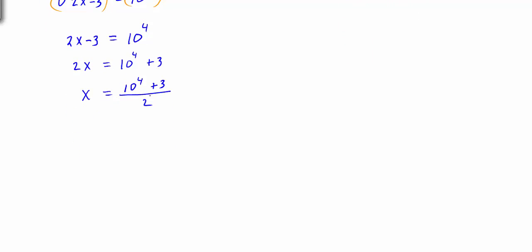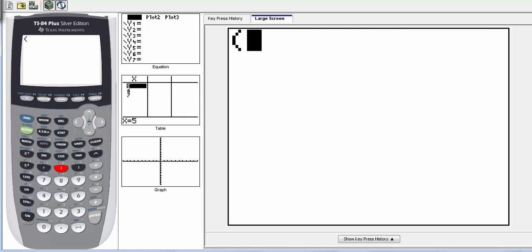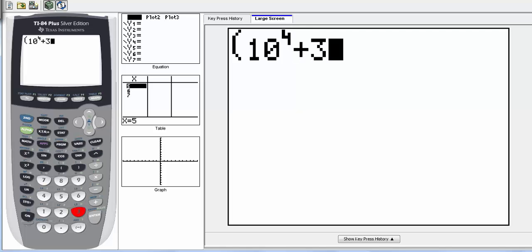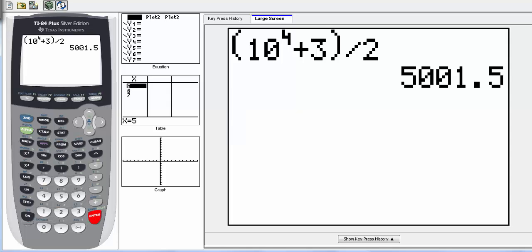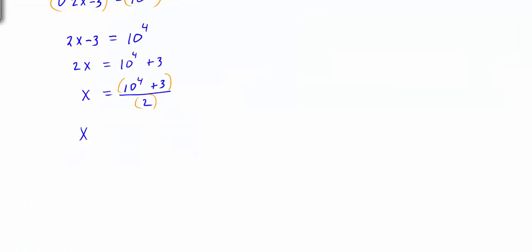Now we can use the calculator. Enter parentheses, then 10 raised to the fourth power, plus 3, close parentheses — that's our numerator — divided by 2. Because there's only one term in the denominator, parentheses aren't strictly necessary, but it's a good habit. We end up with the exact answer of 5001.5.